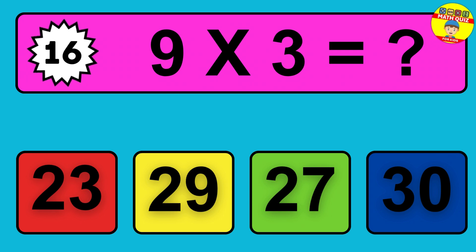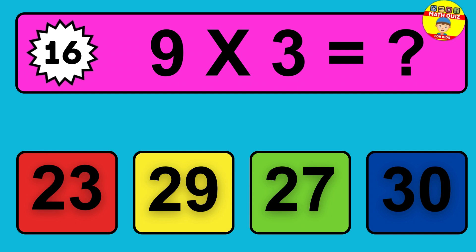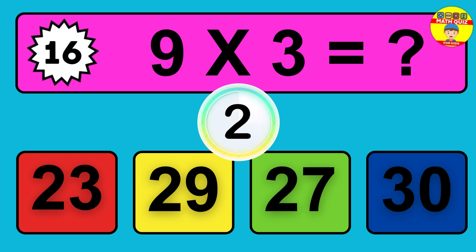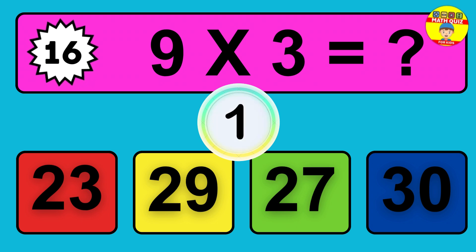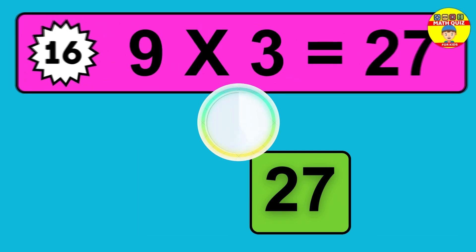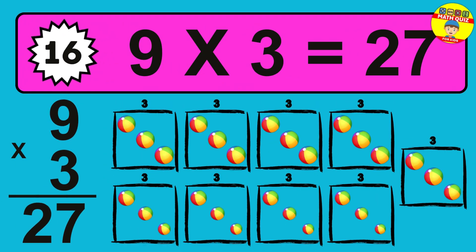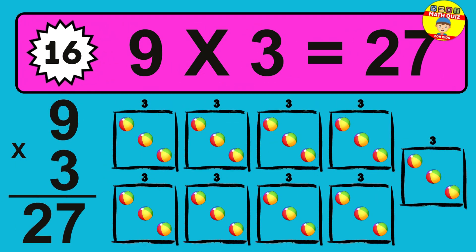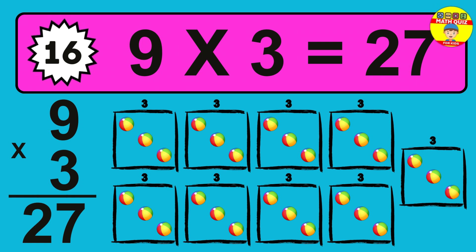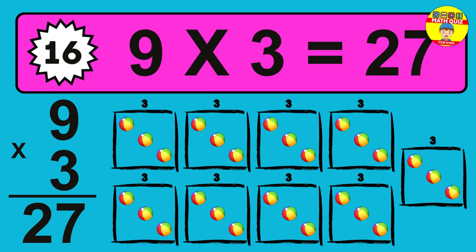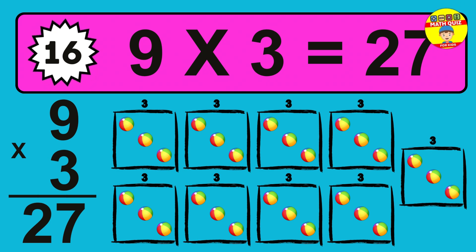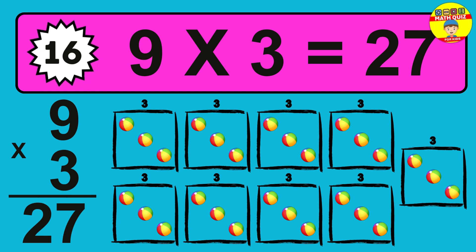Question 16. Nine times three equals what? So the answer is nine times three is twenty-seven. To calculate, we have nine groups with three balls each one. So how many balls do we have? Twenty-seven balls.